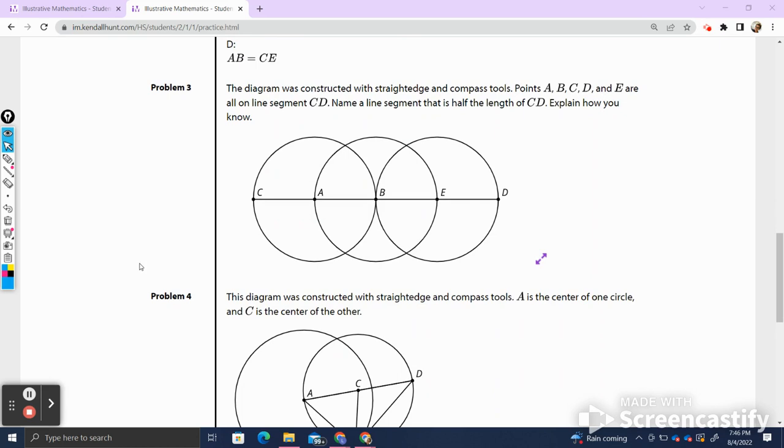Let's look at problem three. The diagram was constructed with straightedge and compass tools. Points A, B, C, D, and E are all on line segment CD. So I'm going to find C, and I'm going to find D, and I see how all of these points are all lined up. Name a line segment that is half the length of CD. So I see CD goes all the way over there. I immediately want to say, hey, that's half, but we are geometry students now, and that is not what we do.